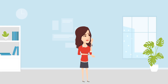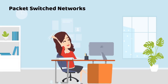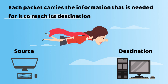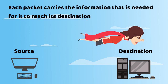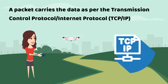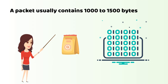How do the packets travel across the internet? Thanks to the packet-switched networks which move the data in small packets. Each packet carries the information that is needed for it to reach its destination device. A packet carries the data as per the Transmission Control Protocol, Internet Protocol. A packet usually contains 1000 to 1500 bytes.